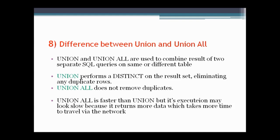The next question asks what the difference is between UNION and UNION ALL. Both UNION and UNION ALL are used to combine the results of two separate SQL queries on the same or different tables. UNION performs a DISTINCT on the result set by eliminating duplicate rows, whereas UNION ALL does not remove duplicates. Therefore UNION ALL is faster than UNION, but its execution may appear slow because it returns more data which takes more time to travel via the network.